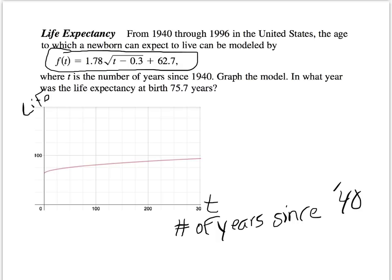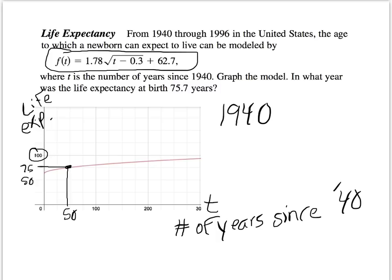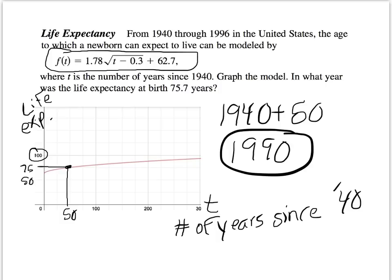The question asks: in what year was the life expectancy at birth 75.7 years? The horizontal axis is t, years since 1940, and the vertical axis is life expectancy. At 100 years we have a marker; 50 is halfway. At about 75 on the vertical axis, we draw a horizontal line and it intersects the graph at approximately t equals 50. Since t is years since 1940, that means in approximately 1990 the life expectancy at birth was around 75.7 years.